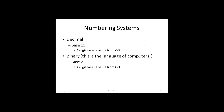We are all accustomed to numbers — we use them on a daily basis. The numbers we use without even knowing it make up the decimal system. The decimal system is the base 10 system where digits take a value from 0 to 9. Computers do not understand the decimal system; computers understand zeros and ones. The smallest unit of information a computer deals with is a 0 or 1, known as the binary system. The binary system is base 2, where a digit takes a value of 0 or 1.